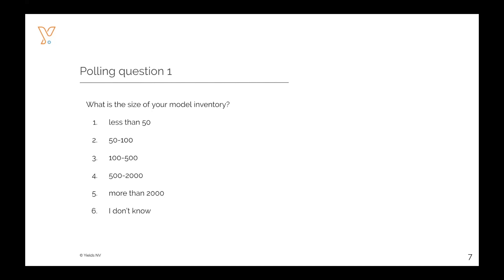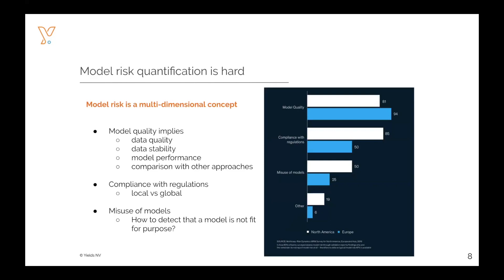Let me start by describing the current state of model risk management. There are a few key challenges that many financial institutions face today. The first one is related to model risk quantification. As I mentioned, normally you try to prioritize model risk management processes by defining a model tier. An important ingredient in that tiering exercise is the quantitative features, which relates to model risk quantification. The key problem many institutions face is that model risk is not really a one-dimensional concept.